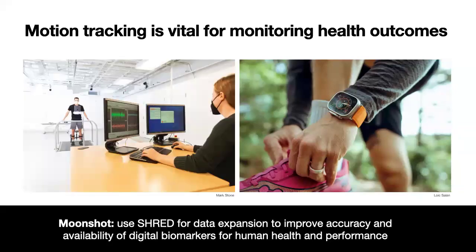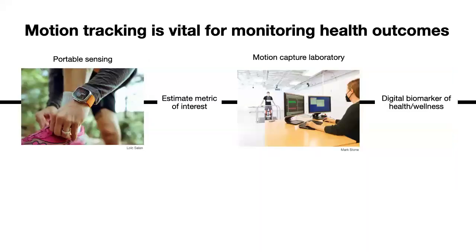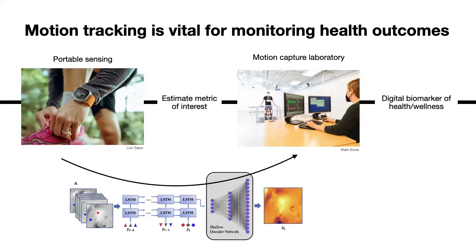My moonshot goal for this is to use our SHRED modeling for data expansion — to improve accuracy and availability of biomarkers for human health and performance. What I mean by data expansion is: we have the ability to measure or estimate metrics of interest in the wild, and we can measure comprehensive datasets in a laboratory setting. My hypothesis is that we can learn a mapping from this sparse set of data to a more comprehensive set of human measurements, such that with this expanded dataset, we can improve the accuracy and availability of monitoring biomarkers agnostic to our environment.